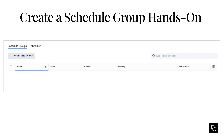Schedule groups allow you to combine multiple schedules and associate them to a singular routing definition. You can assign the schedules into a designated time zone and group them by type.